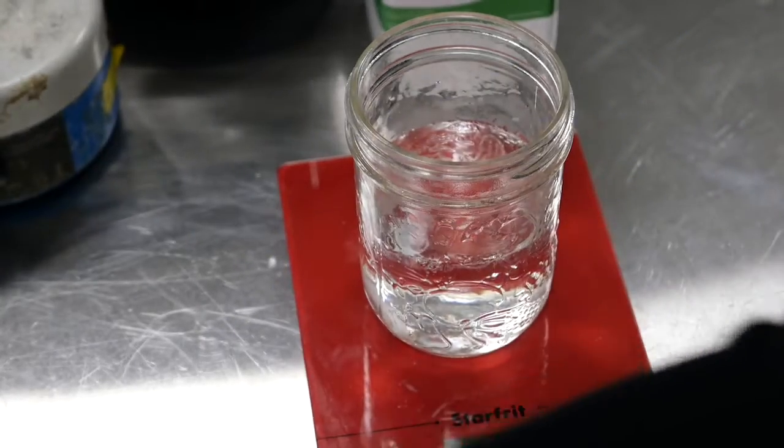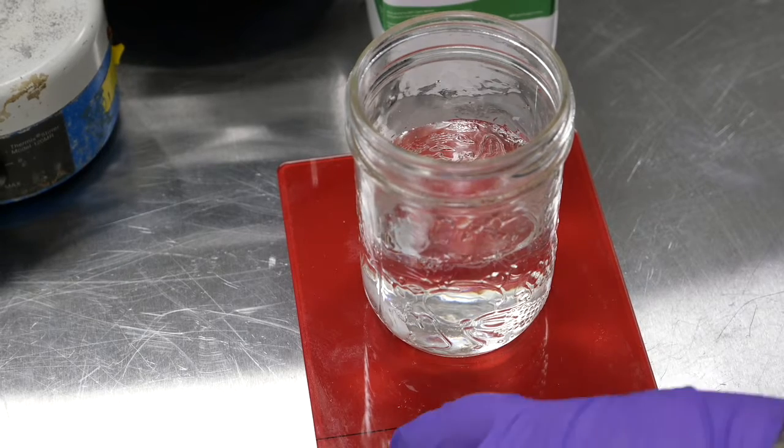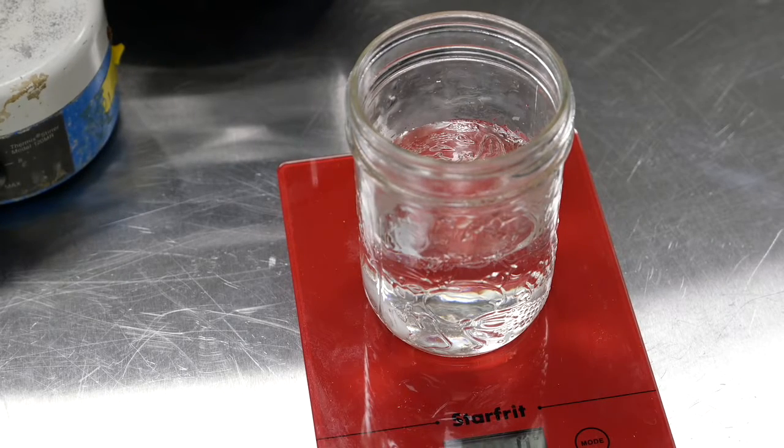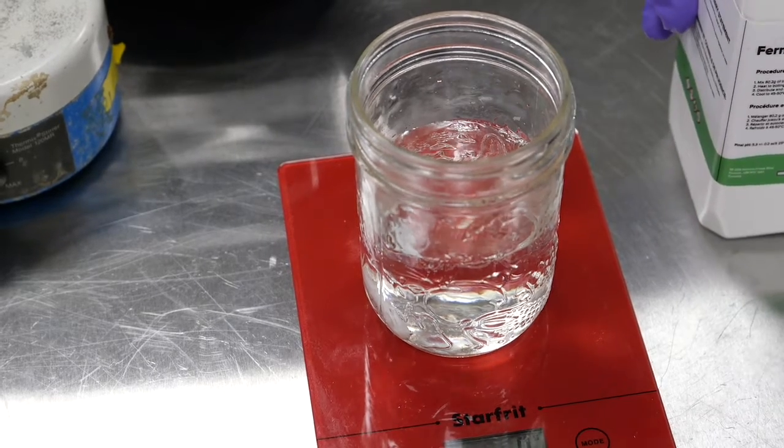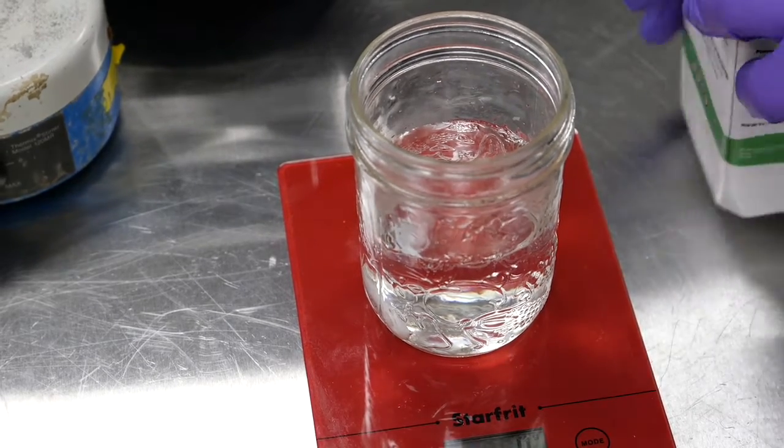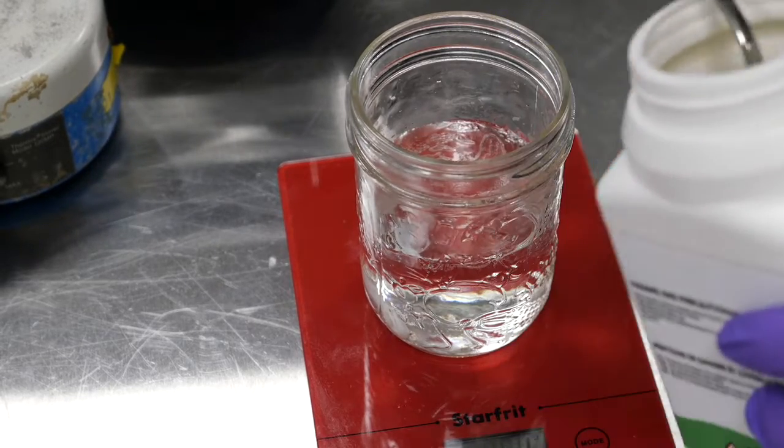And then I'm going to zero that. In this case, we need 80 grams for one liter, so we know we need 20 grams for that quarter liter. So I'm going to use a spoon to weigh that out.